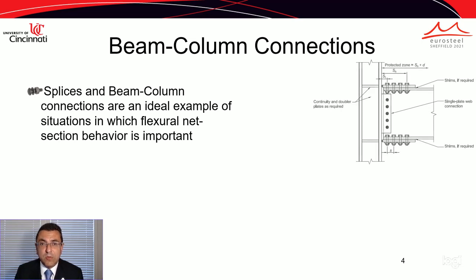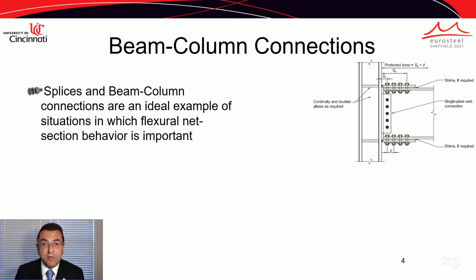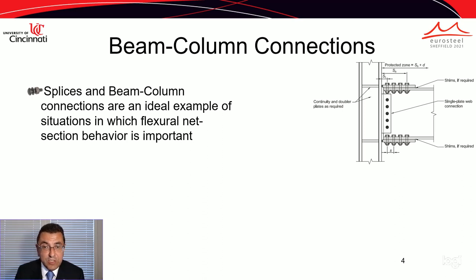The case of beam-column connections is a good example of this. This beam-to-column connection is taken from AISC 358, which contains pre-qualified connections for use in special and intermediate moment frames for seismic applications. This is a bolted flange plate connection, and the plastic hinge in the beam is expected to take place close to the last row of bolts, so there are certainly considerations for the presence of holes in the flanges.